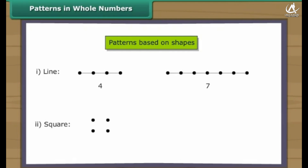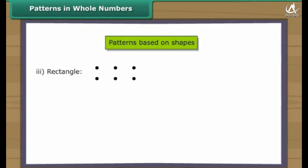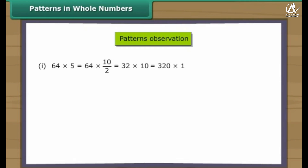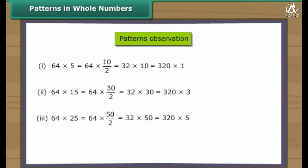Some numbers can be arranged as squares, for example. Some numbers can be arranged as rectangles — rectangles can be a horizontal arrangement or a vertical arrangement, for example. Some numbers can be arranged as a triangle, for example. Sometimes a pattern is observed in whole numbers which can help in simplifying the calculation process, for example.